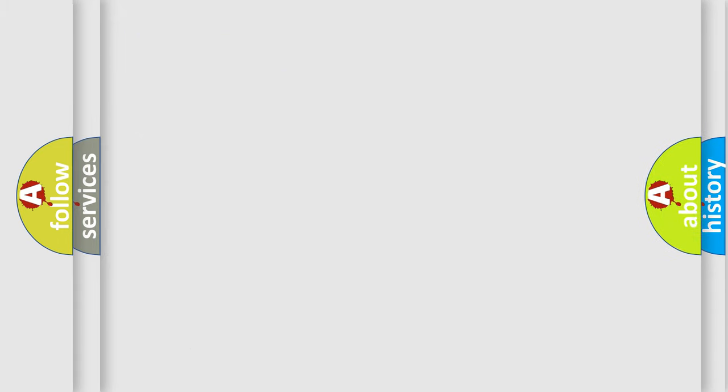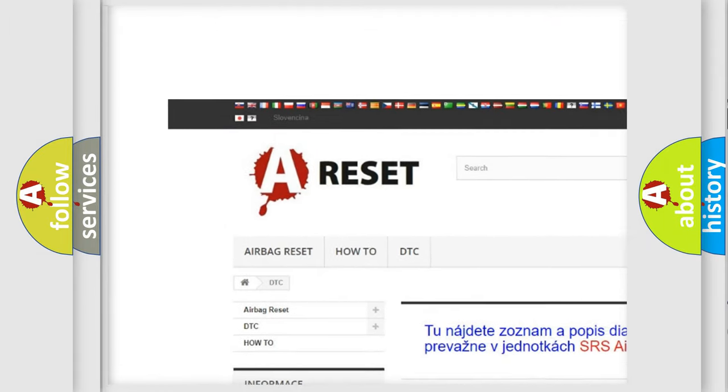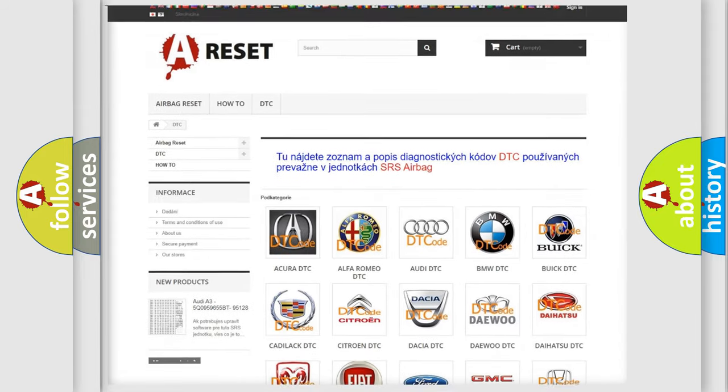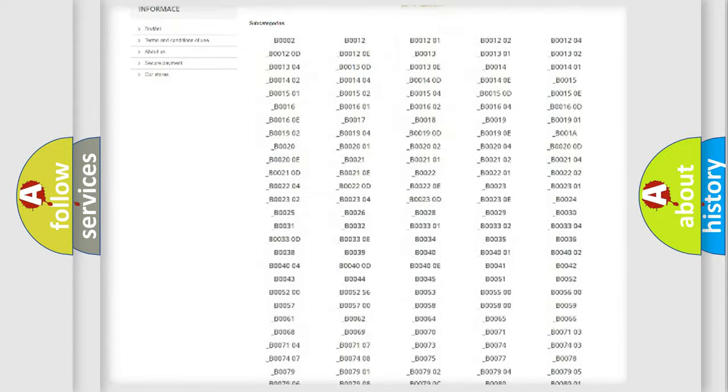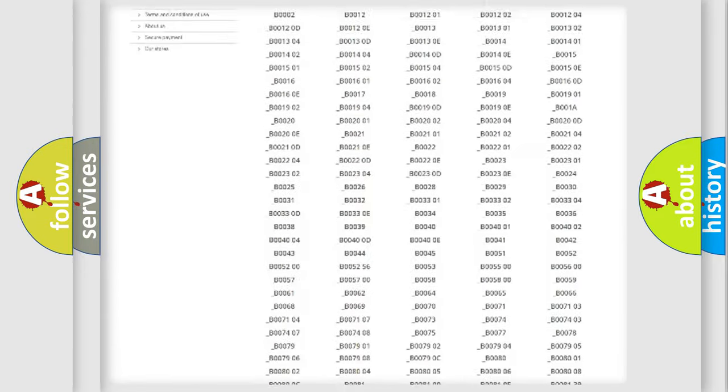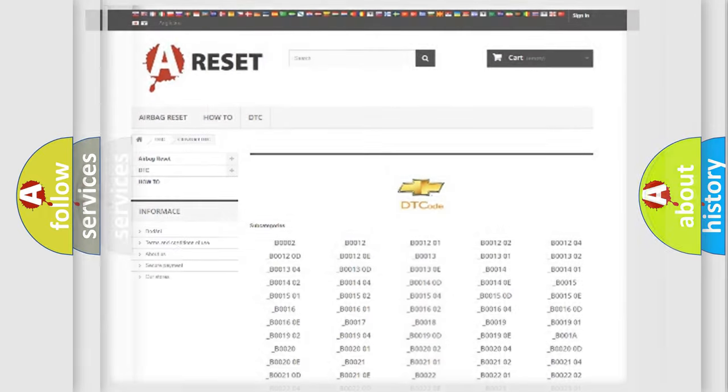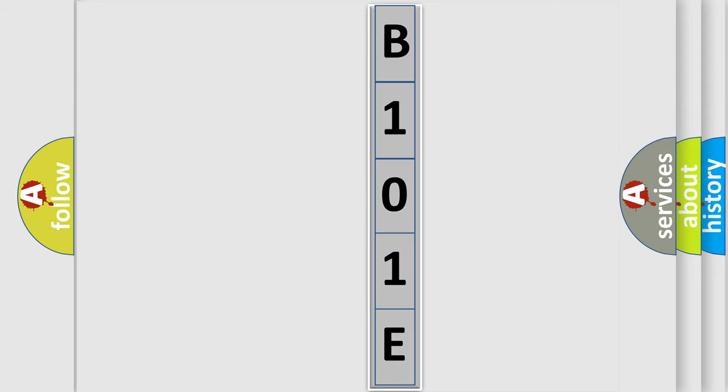Our website airbagreset.sk produces useful videos for you. You do not have to go through the OBD2 protocol anymore to know how to troubleshoot any car breakdown. You will find all the diagnostic codes that can be diagnosed in Chevrolet vehicles and many other useful things. The following demonstration will help you look into the world of software for car control units.